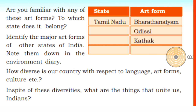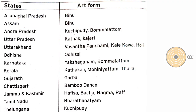Let's make a table of states and art forms. Tamil Nadu — Bharatanatyam. Arunachal Pradesh — Bihu; Assam — also Bihu. Andhra Pradesh — Kuchipudi and Bommalatam. Uttar Pradesh — Kathak, Kajri; Uttarakhand — Vasantha Panchami, Choliya, and Holi. Odisha — Odissi. Karnataka — Yakshagana and Bommalatam.